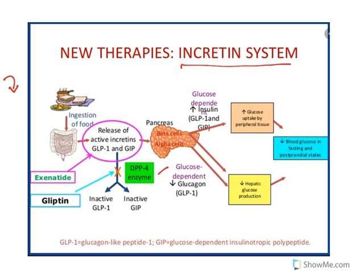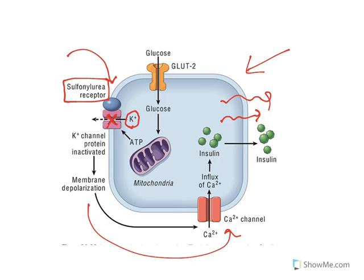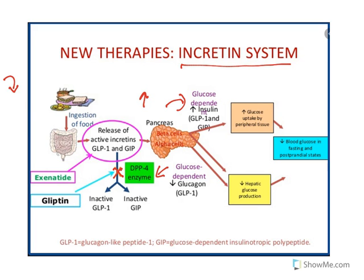These incretins are metabolized by dipeptidyl peptidase-4 enzyme. If this enzyme is inhibited, incretin levels increase, and therefore insulin release is increased. The drugs in this class — called gliptins — include sitagliptin, saxagliptin, and alogliptin. Additionally, GLP-1 analogs like exenatide can be given intravenously; though not oral drugs, they have a similar incretin effect and increase insulin release. These two classes are also considered insulin secretagogues, alongside sulfonylureas and meglitinides.